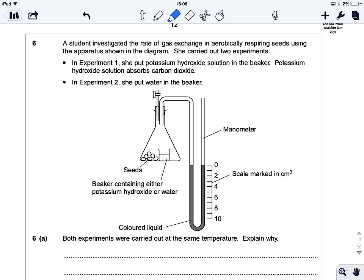Before we even start with this question, the first thing we should do is understand what the experiment is trying to do. A student investigated the rate of gas exchange in aerobically respiring seeds using the apparatus showing the diagram. She carried out two experiments. In experiment one, she put potassium hydroxide solution into the beaker, and it tells you that potassium hydroxide solution absorbs carbon dioxide. In experiment two, she put water into the beaker.